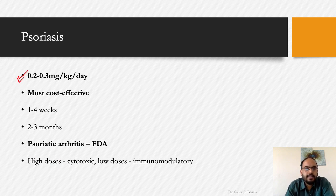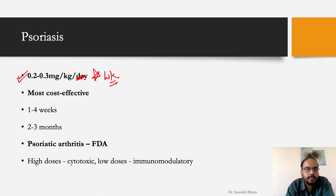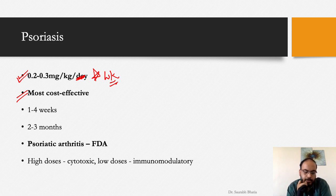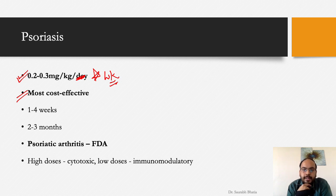The dose of methotrexate for psoriasis is 0.2 to 0.3 mg per kg per week. Clinical efficacy is seen in 1 to 4 weeks, with good outcomes at 4 to 8 weeks. Minimum therapy of 2 to 3 months is recommended. Patients should be counseled that near-complete clearance or PASI 75 response may take several months. Roughly 3 to 4 months is needed for proper benefit.